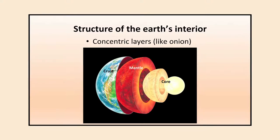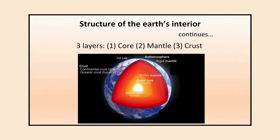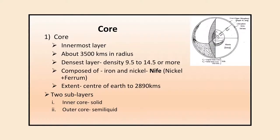You can see in the picture that the Earth has different layers in a concentric ring form — its core, mantle, and crust. There are three layers: the core is the innermost layer, the mantle is the layer above the core, and the crust is the outermost layer where we all live. From inside to outside: core, mantle, then crust.